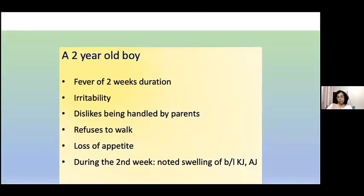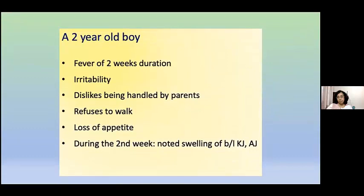Our patient today is a two-year-old boy who is admitted to the hospital. The mother complains that the child has had fever for two weeks duration. During this period the child has been irritable and disliked being handled by parents. He also refused to walk. His appetite has been down. Towards the latter part of the illness — during the second week — the mother noticed swelling of bilateral knee joints and bilateral ankle joints. What could be the possibilities and what other information will you need to arrive at a differential diagnosis?